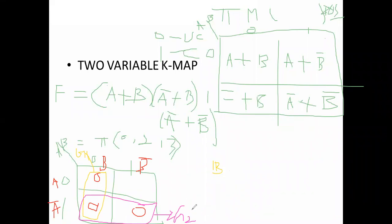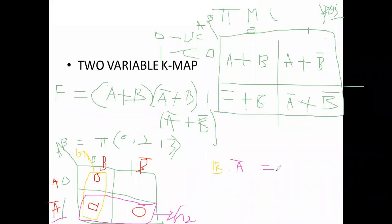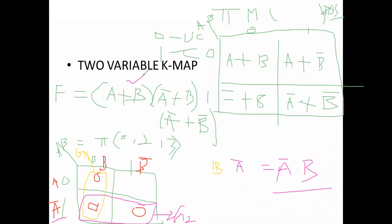What about the second group? At this second group, what is the A value? This is A bar. What about B values? This group covers B plus B bar — both are covered, that value is 1. So the answer we are getting is A bar. Group 1 dot group 2 gives us A bar dot B. So if this is the given question, by simplifying we get the answer A bar dot B.